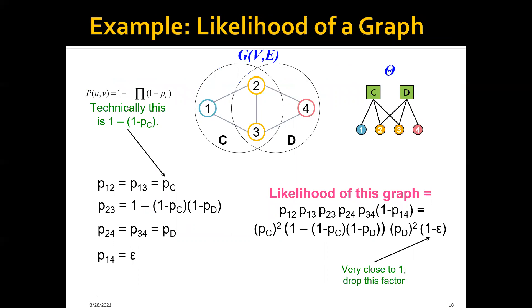As a more concrete example, let's say that we have this graph here of four nodes. And we also have the parameter θ here.